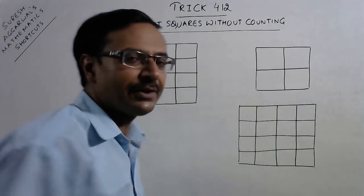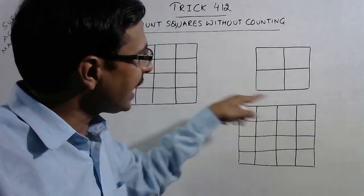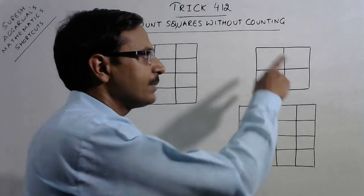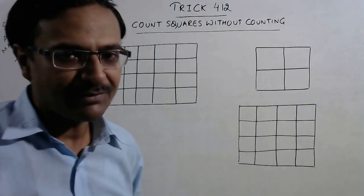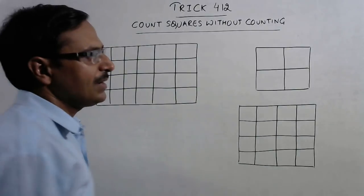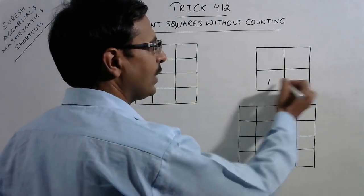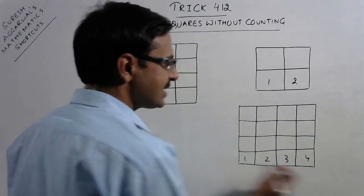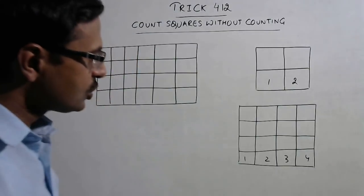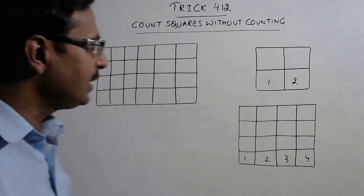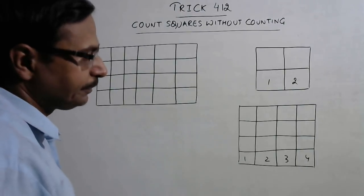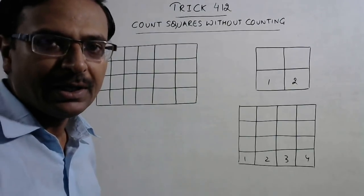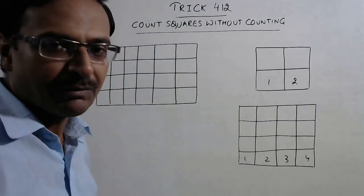This is the first kind of figure in which the number of rows and the number of columns are the same. Whenever we have the number of rows and columns the same, things are very simple. In the bottom row you have only two squares, whereas in this figure you have four squares and four in the column also. These are of the same type, and once you know this, applying the shortcut will take only two or three seconds to solve the question without counting the squares.